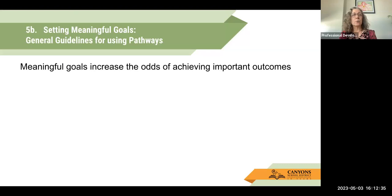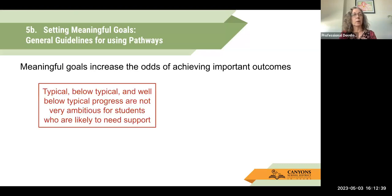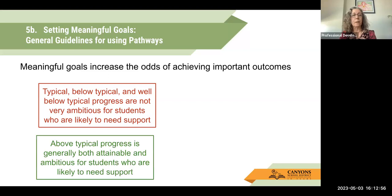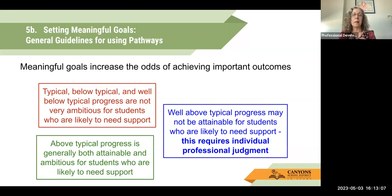General guidelines: meaningful goals increase the odds of achieving important outcomes. Typical, below typical, and well below typical progress are really not very ambitious for students who are likely to need support — that's usually not a goal we're going to choose for a student who's below benchmark. Above typical progress is usually both attainable and ambitious for students who need support. However, well above typical progress may or may not be attainable for some students, so individual professional judgment comes into play. This would be a great focus for a PLC with your team if you're struggling to know where to set a particular student's goal.